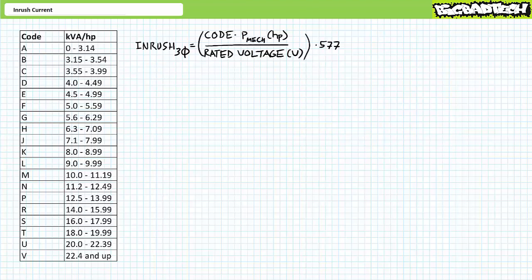As you're no doubt aware, a motor at rest experiences a momentary surge of current known as inrush, starting current, or locked rotor current when energized by full voltage. Inrush current may be about six times rated current, although in this lecture we'll learn to calculate it more precisely. As the motor comes up to the rated speed, current will drop to the rated value.